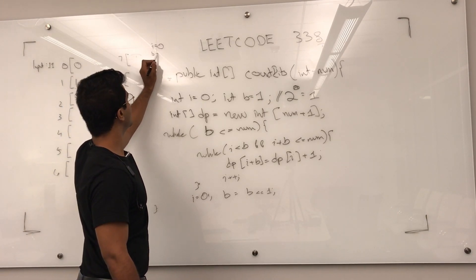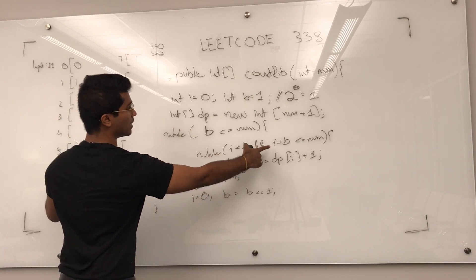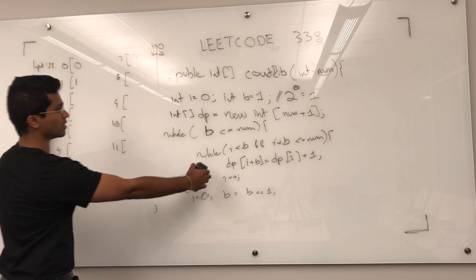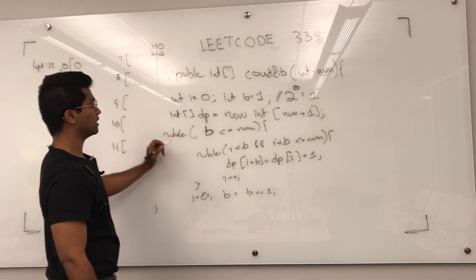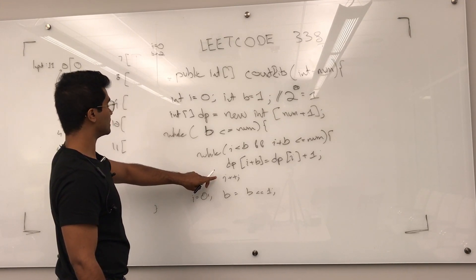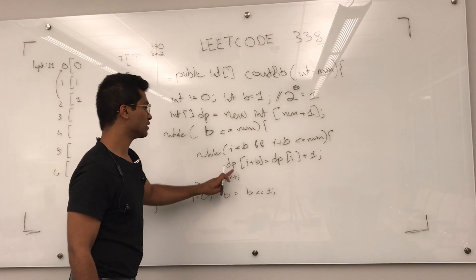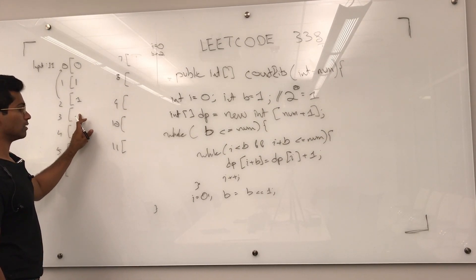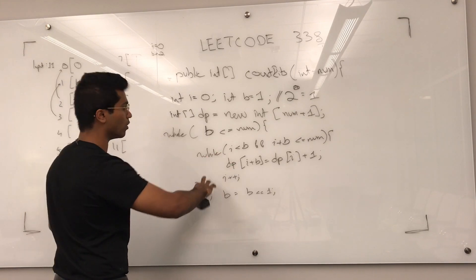Now i is 0 and b is 2. 2 is less than or equal to 11, so we enter. 0 is less than 2 and 0 plus 2 is less than 11, so dp[2] is going to be based on dp[0] plus 1, giving dp[2] = 1. Then i is incremented to 1: 1 is less than 2 and 1 plus 2 is 3 which is less than 11, so dp[3] is going to be dp[1] plus 1, giving dp[3] = 2. Then i is incremented to 2: 2 is not less than 2, so we exit the inner loop.